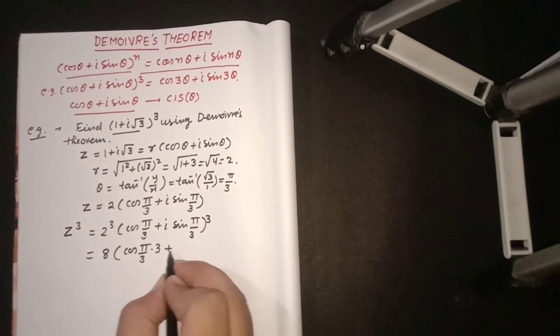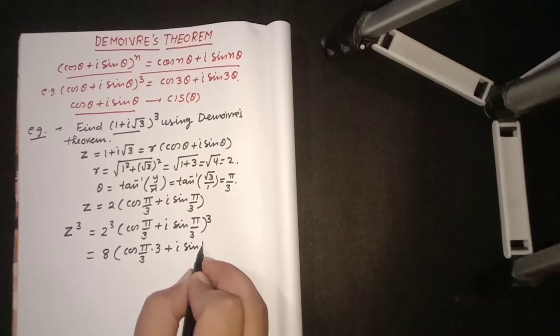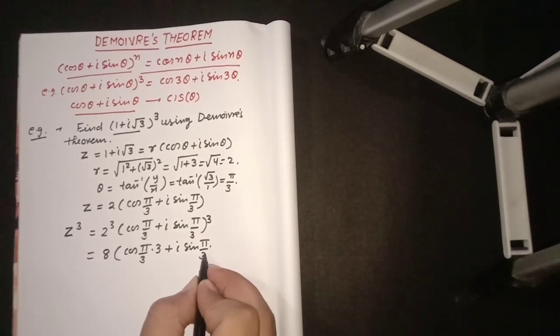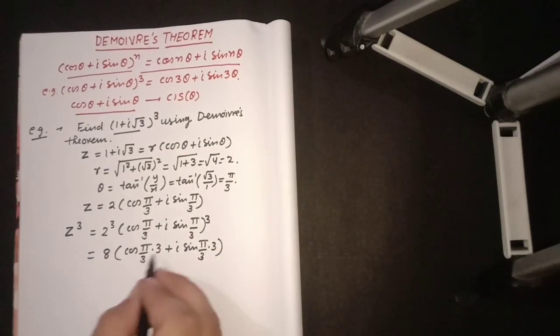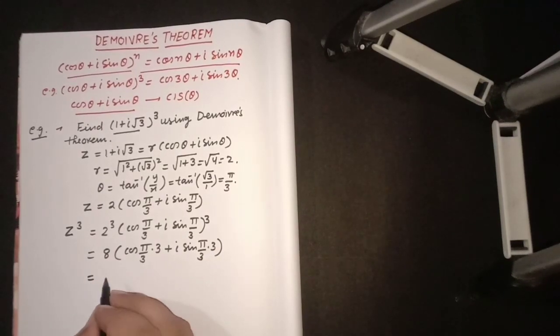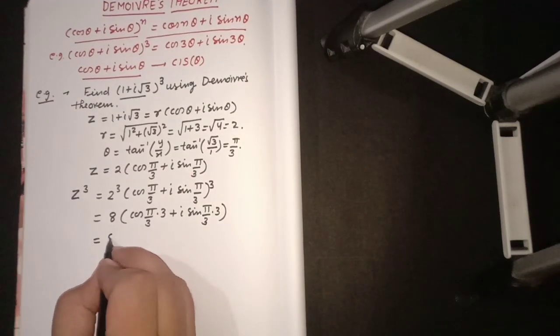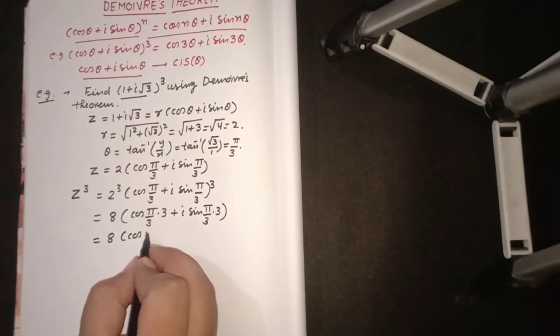That's π/3 × 3 plus i sin π/3 × 3. So that will cancel out, 3 and 3 will cancel out, and the result will come out 8(cos π + i sin π).